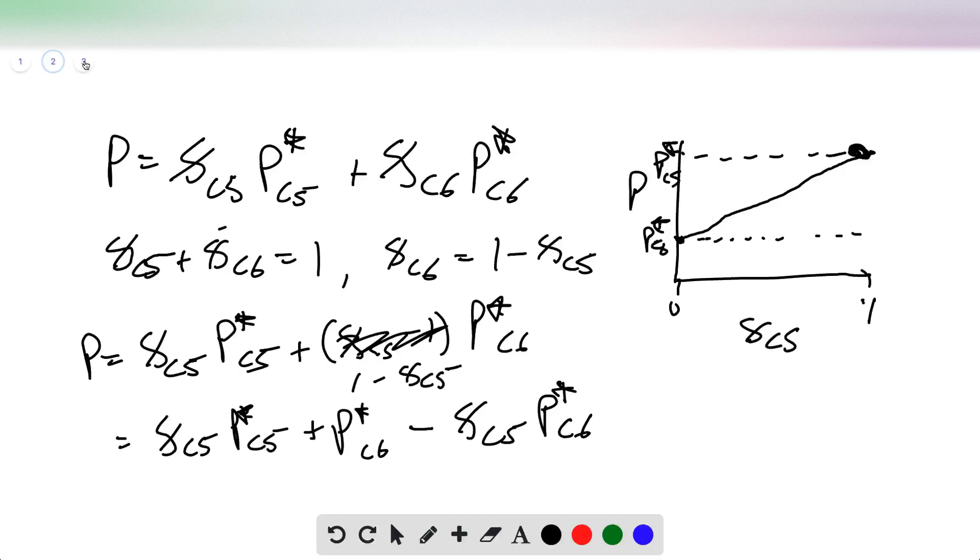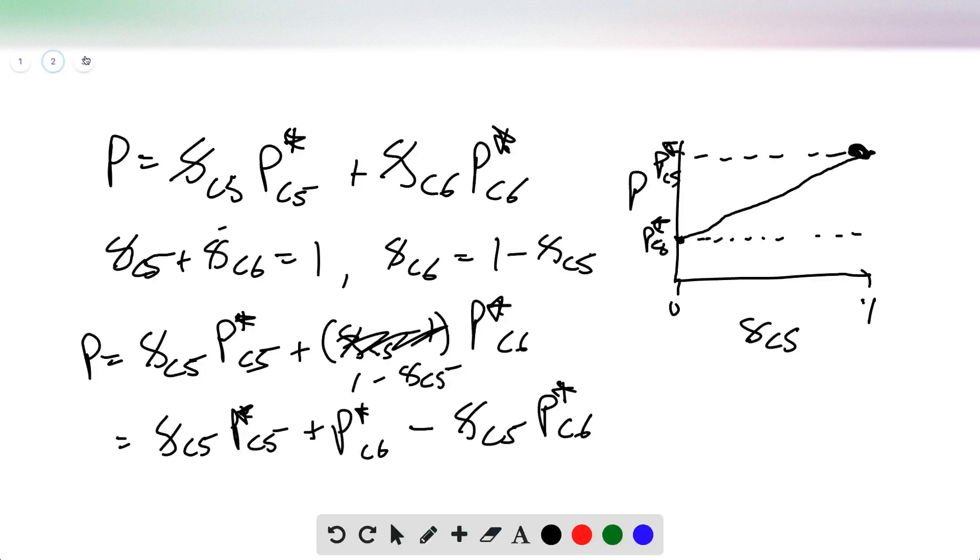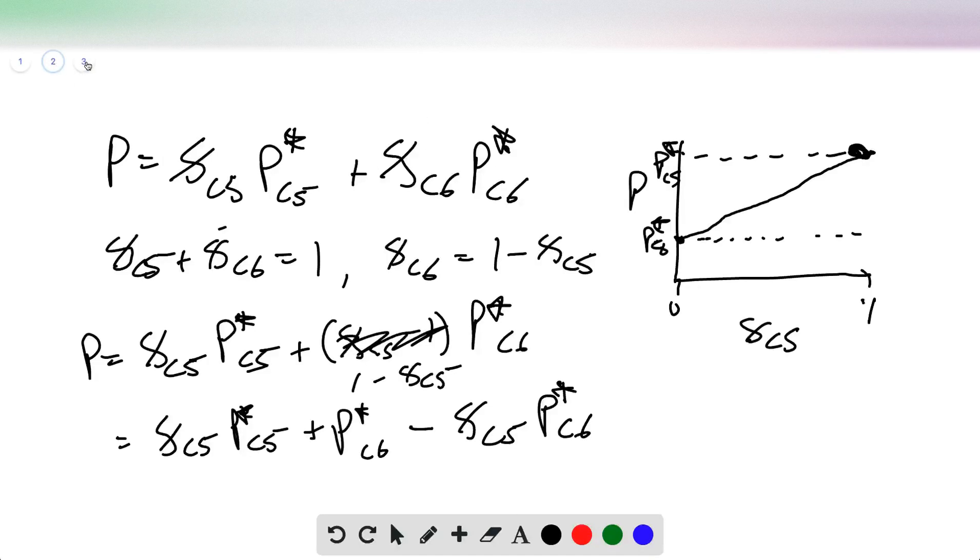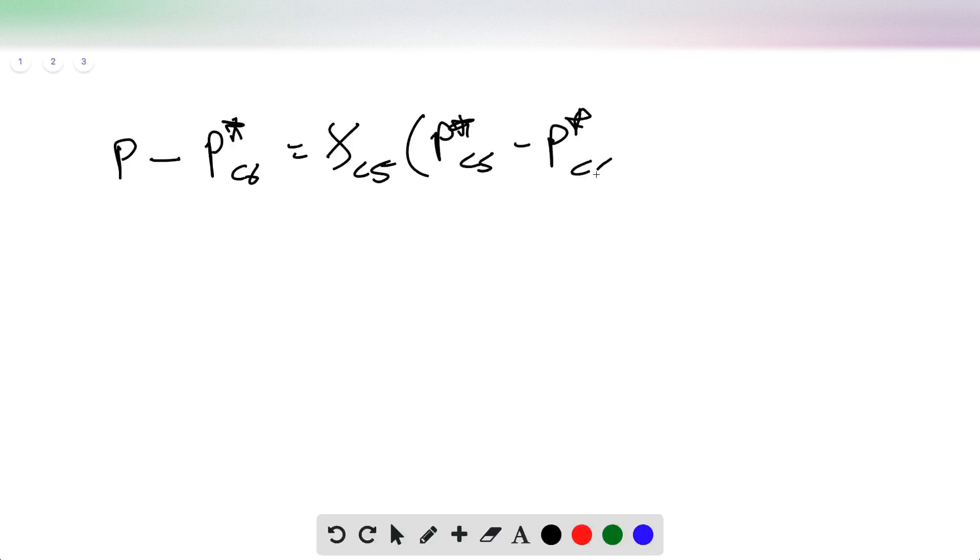The mole fraction of C6 is just 1 minus the mole fraction of C5, which means P equals the mole fraction of C5 times P star C5 plus 1 minus the mole fraction of C5 times P star C6. So we multiply that through and get P equals mole fraction C5 times P star C5 plus P star C6 minus mole fraction C5 times P star C6. Pressure minus pressure star C6 equals the mole fraction of C5 times P star C5 minus P star C6. And to finish this off, the mole fraction of C5 equals P minus P star C6 over P star C5 minus P star C6.